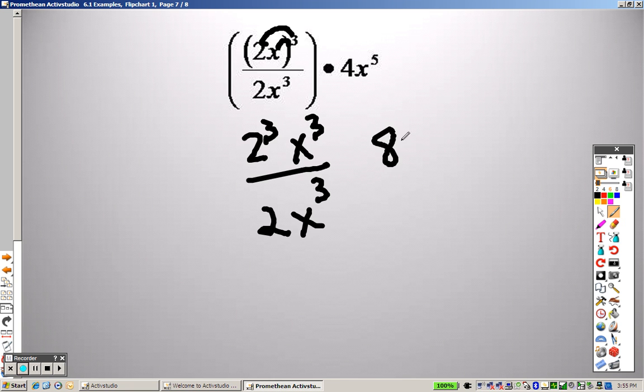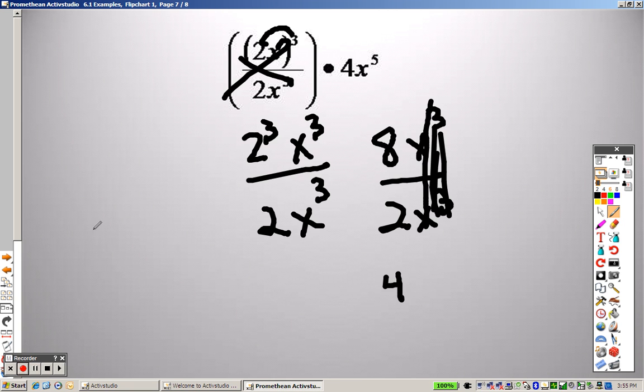Well, 2 cubed is like saying 8. So really it's 8x cubed over 2x cubed. The x cubes cancel, and 8 divided by 2 is 4. So really here's what I'm saying. All of this is 4.